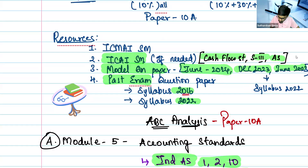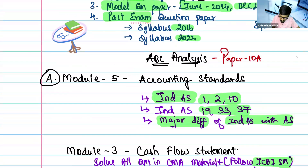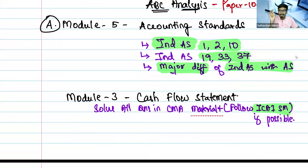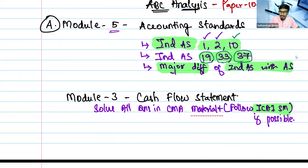Now for the ABC analysis of Paper 10A: first preference will be given to accounting standards — that is your A category. Study in this order: first Ind AS 1, then Ind AS 2, then Ind AS 10, then Ind AS 19, then Ind AS 33, and then 37. Also study theory questions that can be expected, including the major differences between Ind AS and AS.